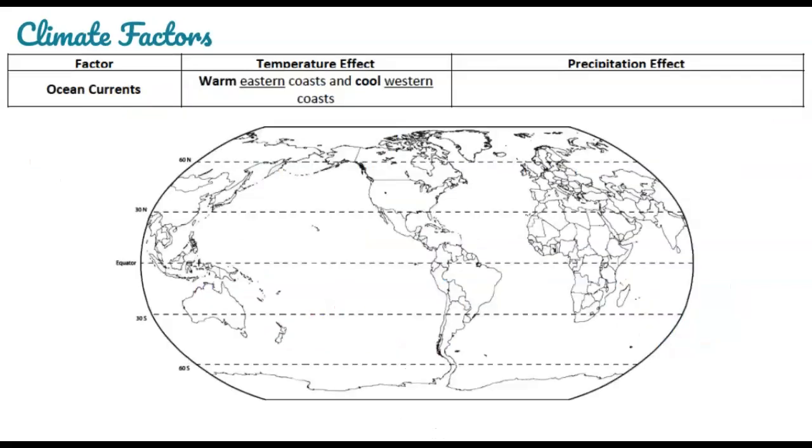All right, the last climate factor has to do with ocean currents and temperature. If you are looking at a place that is near a warm ocean current, such as the east coast of the U.S., that warm water will cause the nearby land to have a warmer climate. Whereas if you're near a place with a cold ocean current, such as the west coast of the U.S., it's going to impact the climate, causing it to cool a little bit.